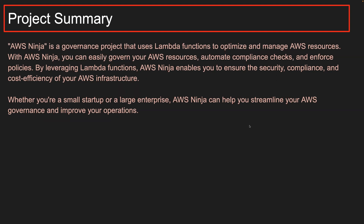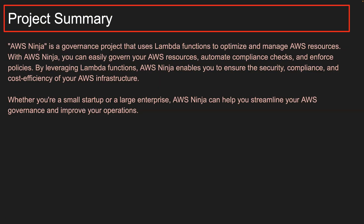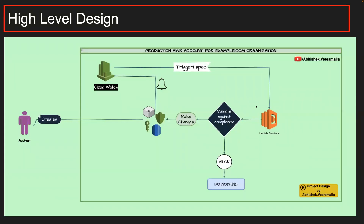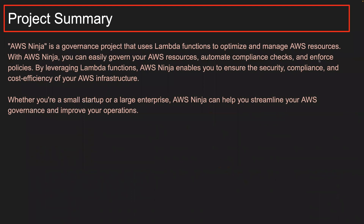Now let's take a look at the project summary. AWS Ninja is a governance project — you can change these words when putting it in your resume. You can say it's a compliance project or a gatekeeper project, whatever you like. In my project description: AWS Ninja is a governance project that uses Lambda functions to optimize and manage AWS resources. With AWS Ninja you can easily govern your AWS resources and automate compliance checks — validating in the Python code of the Lambda function whether the resource matches the organization's compliance. If it matches, do nothing. If not, make changes. That's why I said automate compliance checks and enforce policies.